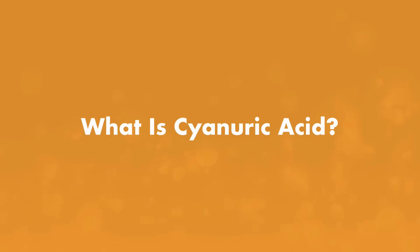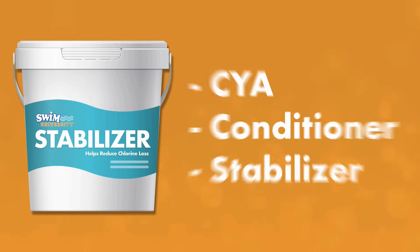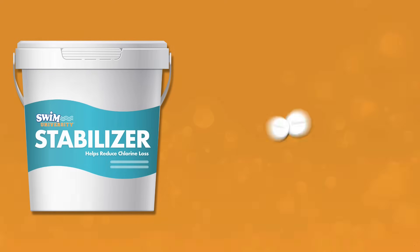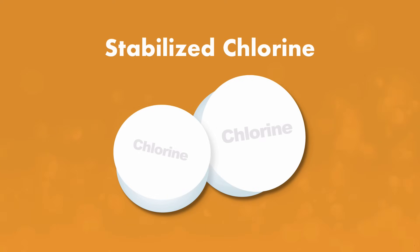What is cyanuric acid? Cyanuric acid is also known as CYA, pool conditioner, or pool stabilizer. It comes in both liquid and granular form. You can even get it pre-mixed in with chlorine tablets or sticks. These products are called stabilized chlorine.